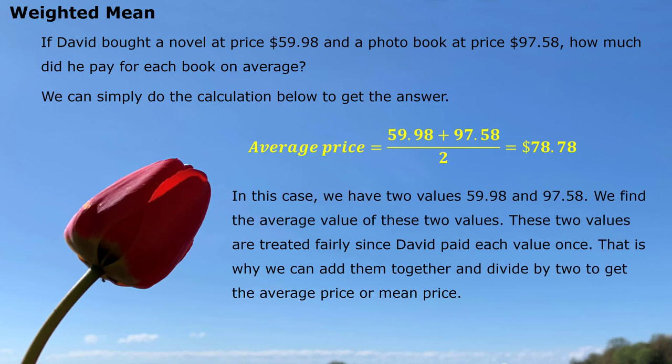In this case, we have two values: $59.98 and $97.58. We find the average value of these two values. These two values are treated fairly since David paid each price once. That is why we can add them together and divide by two to get the average price, or mean price.